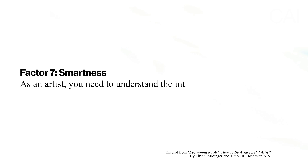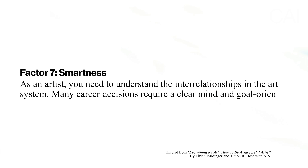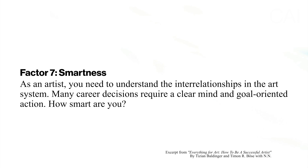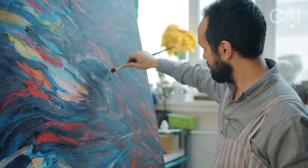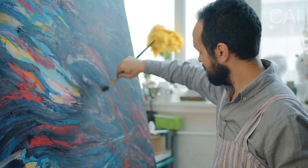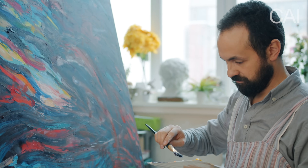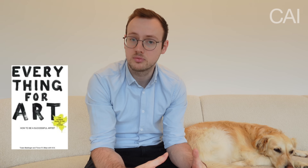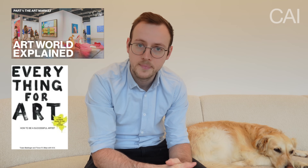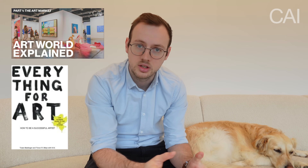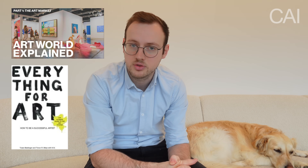Next we have smartness. As an artist you need to understand the interrelationships in the art system. Many career decisions require a clear mind and goal-oriented action. How smart are you? How well do you know the art system? How awake is your spirit, and how well can you see these interrelationships? You can find out more about the art world in the book itself or by reading our article 'Explained: What Is the Art World?'